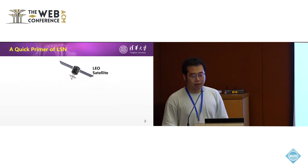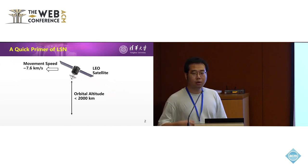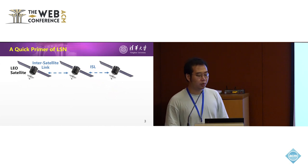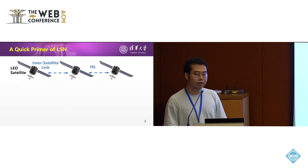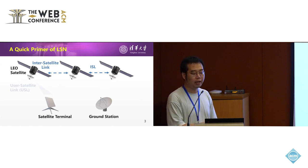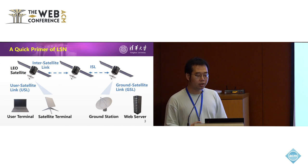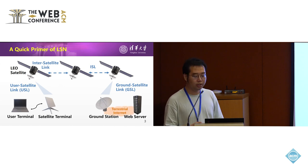The orbital altitude of a typical LEO satellite is within 2,000 kilometers, so it moves around Earth at a very high speed. As the cost of launching satellites is decreasing, many companies have deployed many satellites in space, which can connect to each other with inter-satellite links. This is the space segment of LSN. The ground segment consists of satellite terminals and ground stations, which connect to satellites via user-satellite links and ground-satellite links. For end-to-end communication, the user terminal sends data to the satellite terminal, through satellites to the ground station, through the terrestrial internet, and finally to the web server.